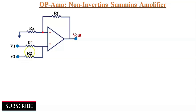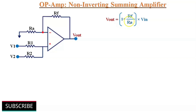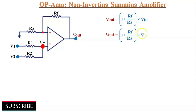First we will discuss the two-input non-inverting summing amplifier. Two input voltages V1 and V2 are applied to the non-inverting terminal through resistors R1 and R2 respectively. The output voltage Vout is equal to (1 + Rf/Ra) times Ving, where Ving is the voltage at this node — let's say V+. So Vout = (1 + Rf/Ra) multiplied by V+. As we have applied multiple inputs, we need to find this voltage V+ by applying the principle of superposition theorem.